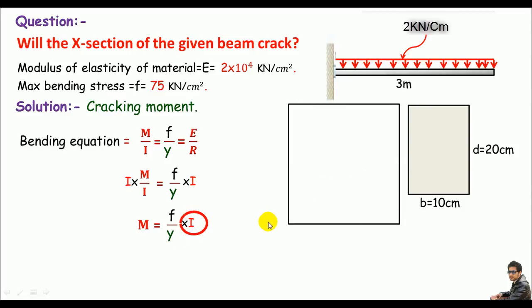So I can calculate I here. Remember this is a rectangular section and the moment of inertia about the neutral axis will be bd³/12. We need to plug in the breadth and depth. The breadth is 10 centimeter times the depth which is 20.